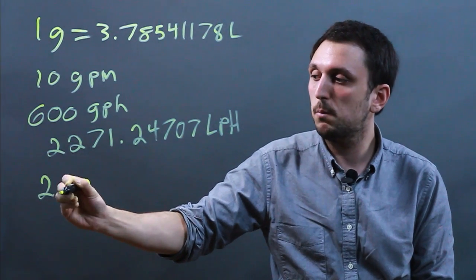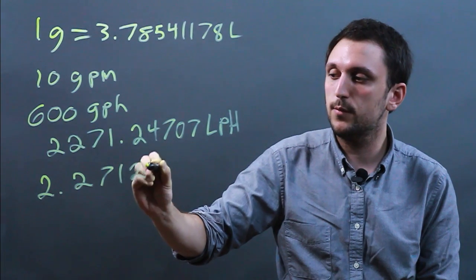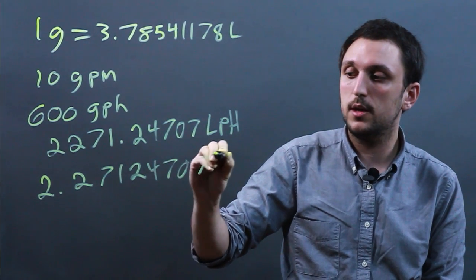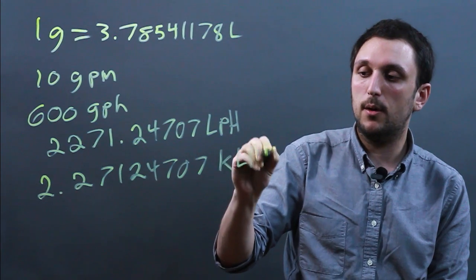We divide by a thousand and we get 2.27124707 kiloliters per hour.